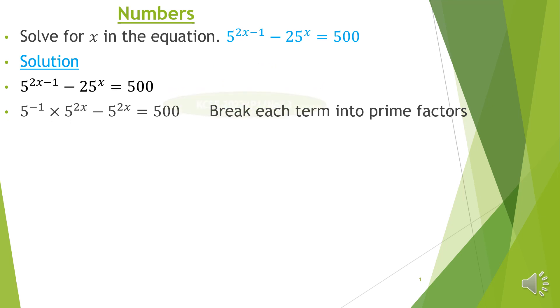So the first one will be 5 to the negative 1 times 5 raised to 2x. Remember we are using the indices aspect here. When the powers are minused, then it means each number was multiplied. So it will be 5 raised to negative 1 times 5 raised to 2x. Then the 25 will be broken into 5 raised to 2 then multiplied by x equals 500. That will be step 1.